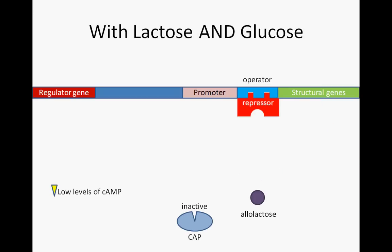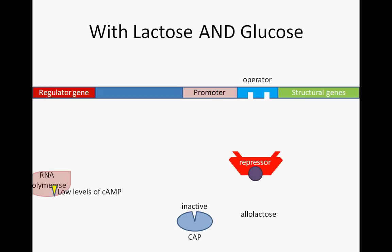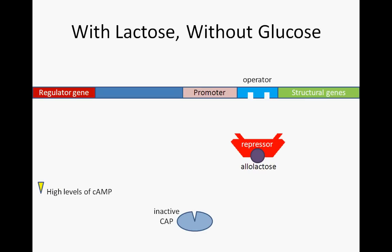Lac operon expression also relies on positive regulation. In order for RNA polymerase to effectively bind and transcribe the structural genes, an active CAP protein complex is required. However, the CAP protein is only active when bound by cyclic AMP. When glucose is available, cyclic AMP levels remain low and CAP therefore remains inactive. Under these circumstances, even though lactose is present, little transcription of beta-galactosidase, permease, and transacetylase occurs. Only when levels of glucose are low is cyclic AMP available to bind and activate CAP, which in turn facilitates transcription through enhanced RNA polymerase binding.